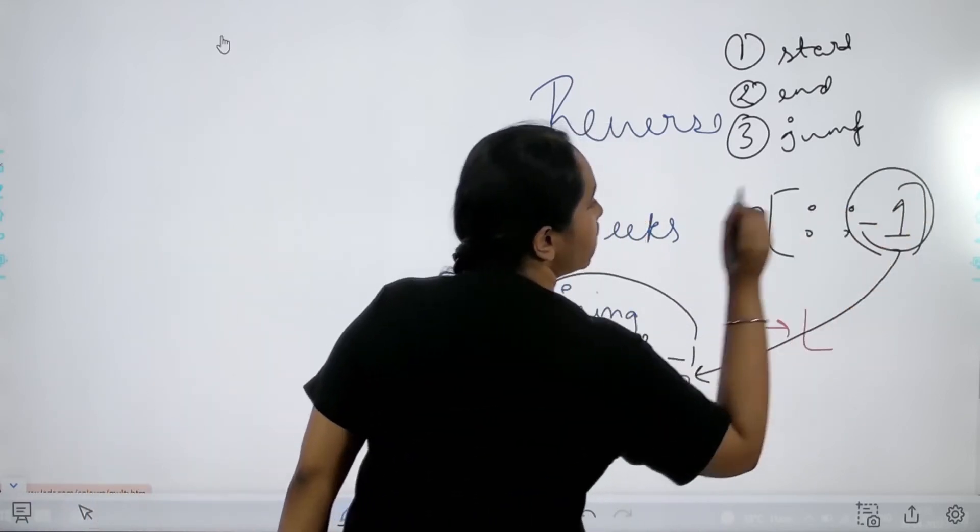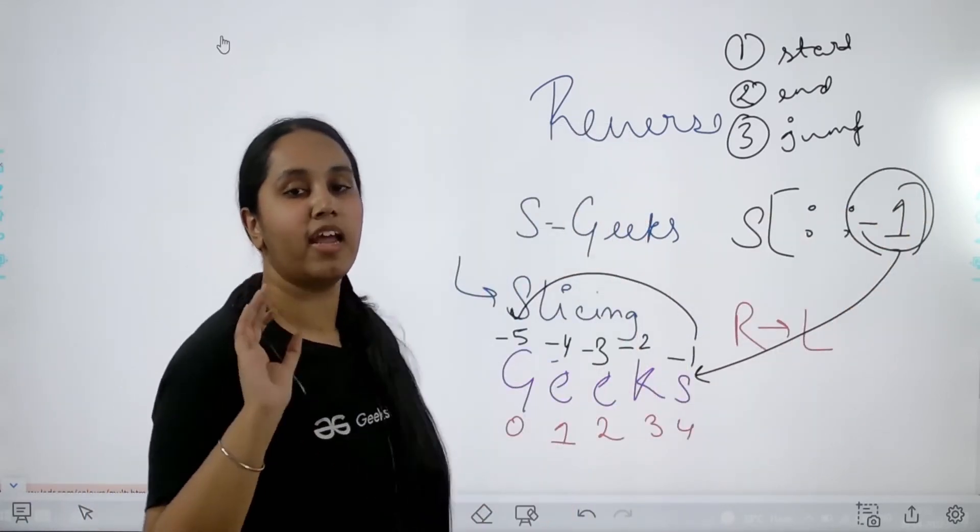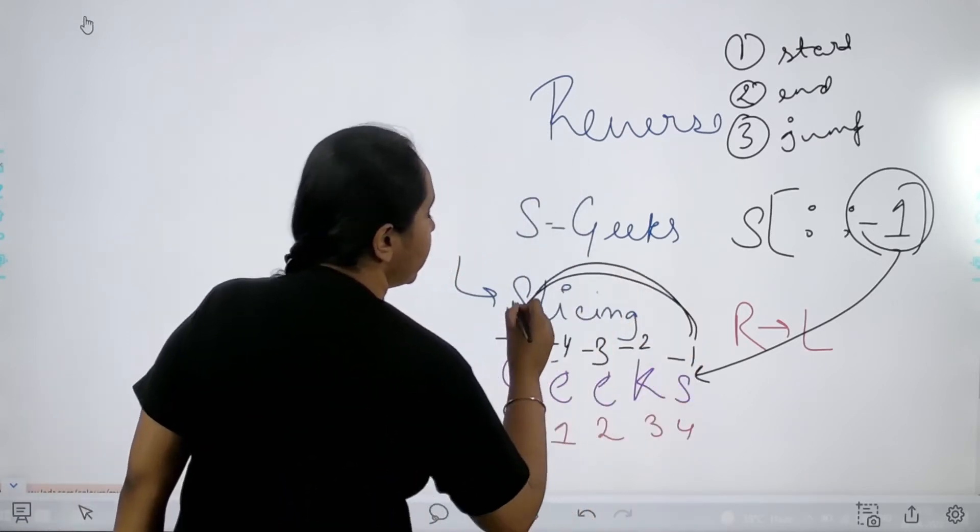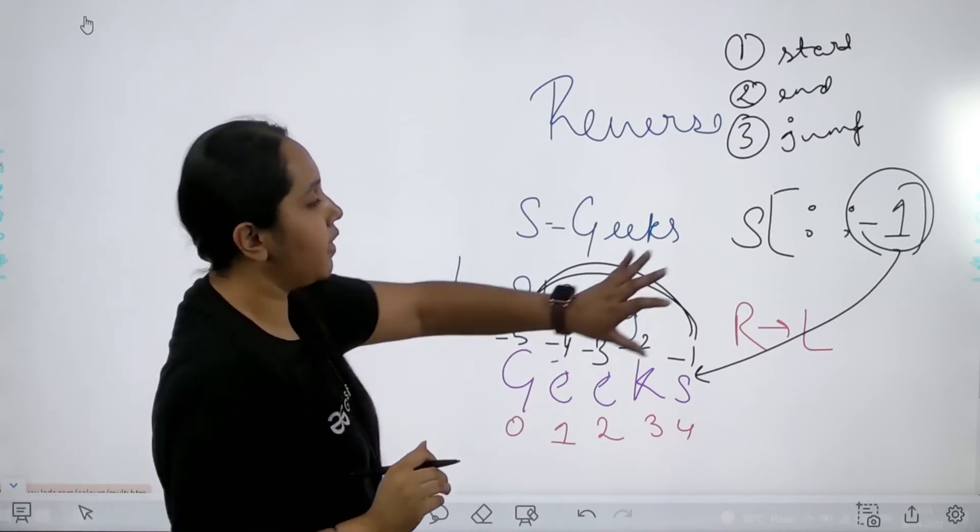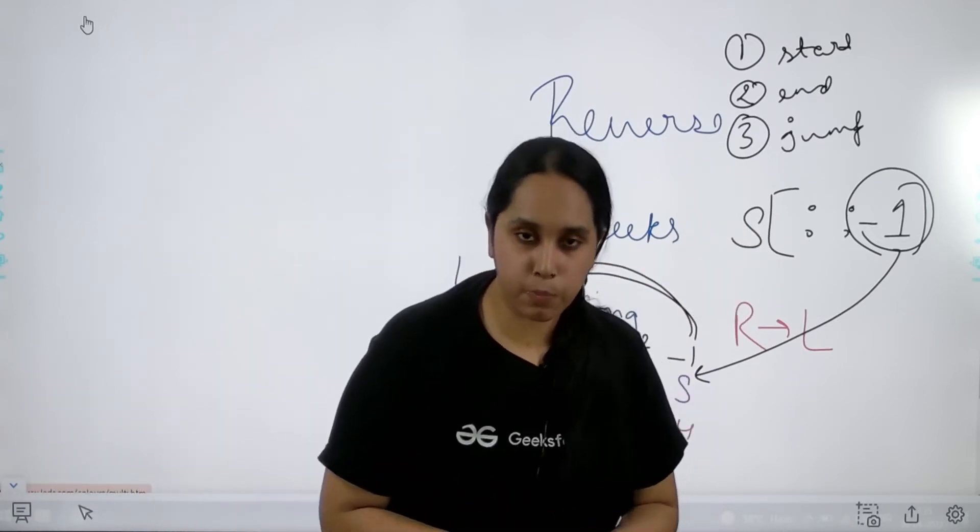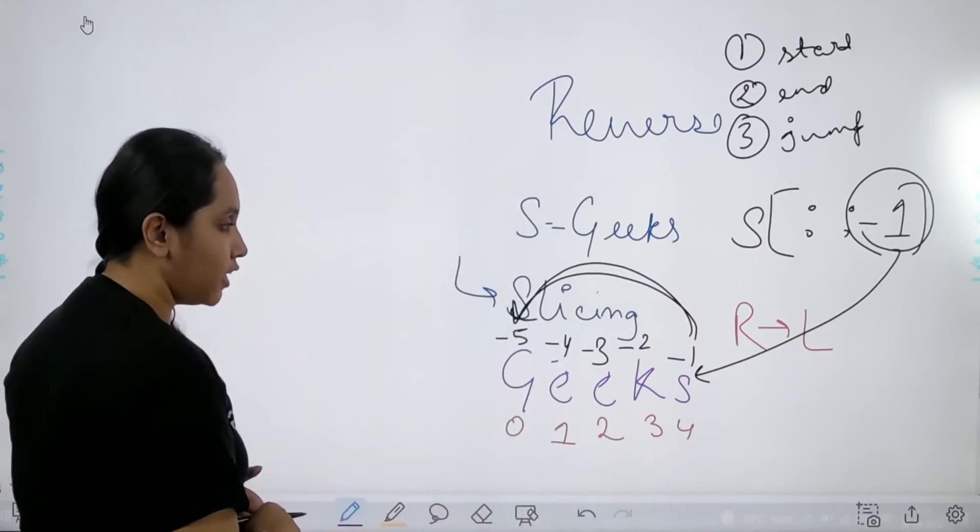I just need to mention that the jump value, the step value is minus 1. Because once I mentioned that, they would automatically go in the reverse direction. So but just by doing this we can easily solve this problem. So I hope this is clear to you.